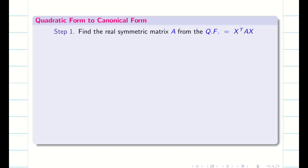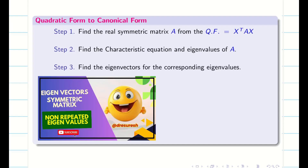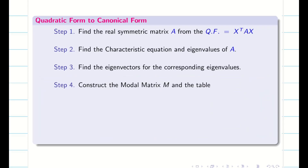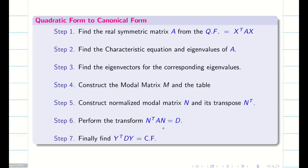Step 1: we have to find the real symmetric matrix. Step 2: find the characteristic equation and the eigenvalues — that is also available in the playlist, you can watch it if you haven't already. Step 3: find the eigenvectors for the corresponding eigenvalues, whether repeated or non-repeated. Step 4: find the modal matrix. Step 5: find the normalized modal matrix N. Step 6: find the diagonalized matrix D. Finally, Step 7: we get the canonical form.